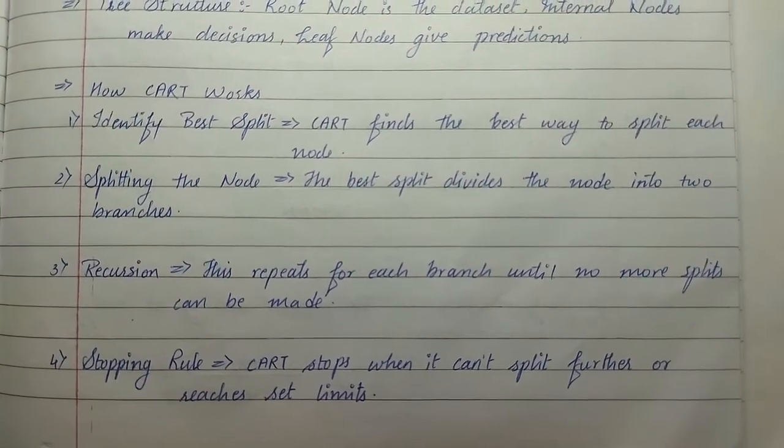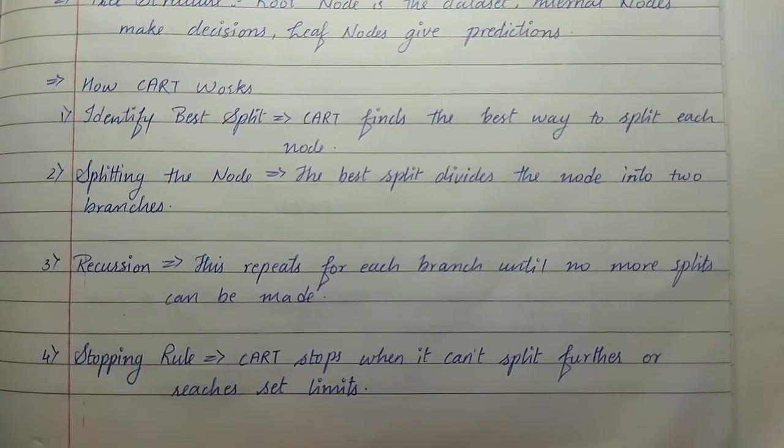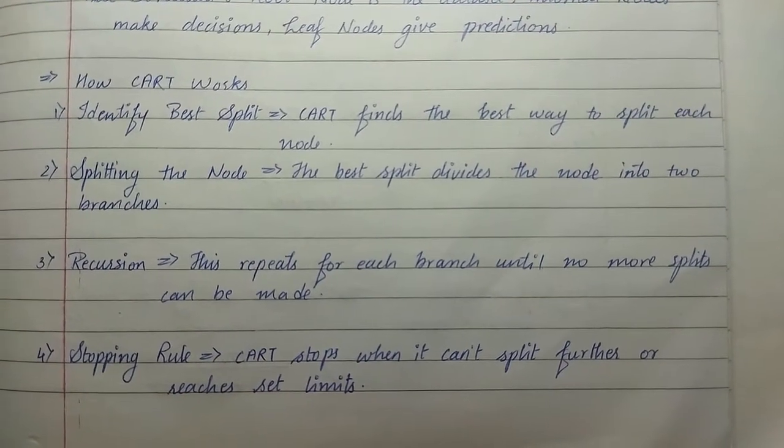Then third is recursion. This repeats for each branch until no more splits can be made. And third, stopping rules.